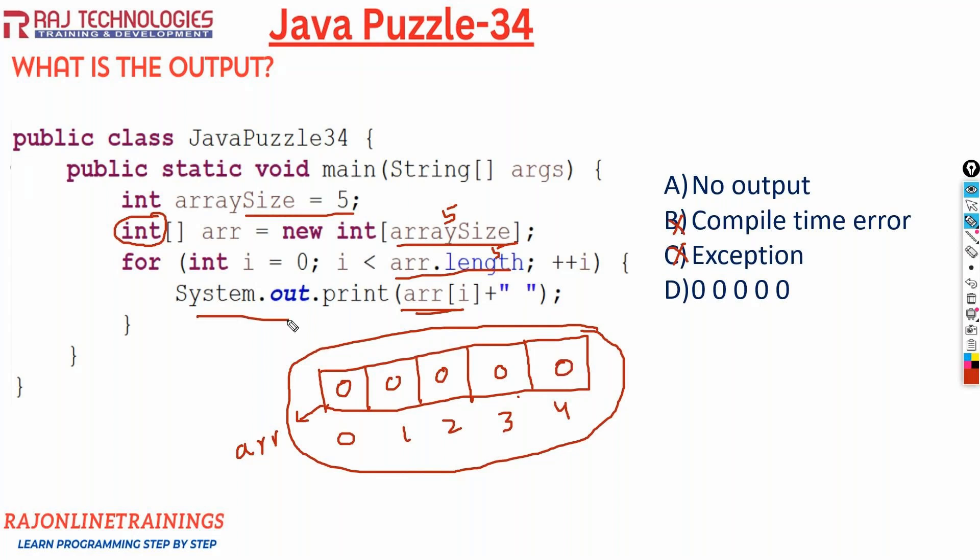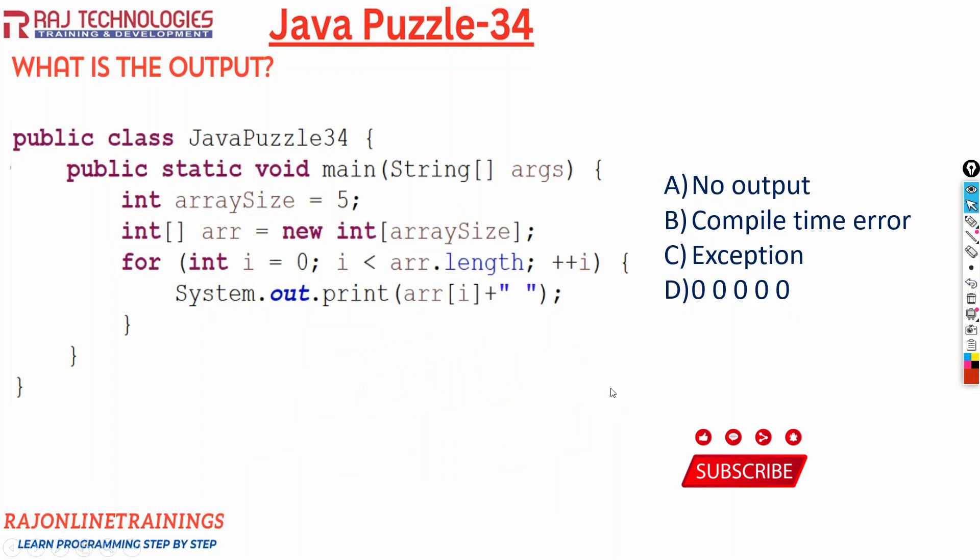So when you are printing the array elements like ARR of zero index, one index, two index, three index, four index, and since the loop repeats for five times, what values is it going to provide? Since the values what it holds is zeros, the correct output of this program is five zeros. So what is the correct output here? Five zeros.